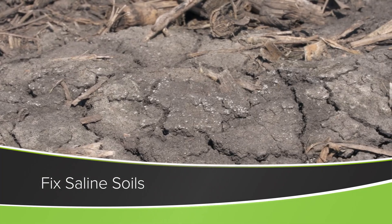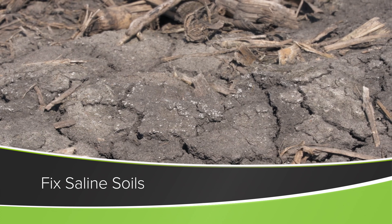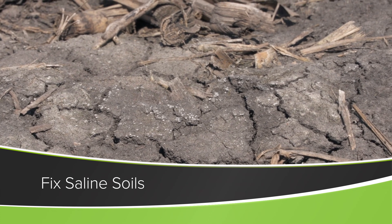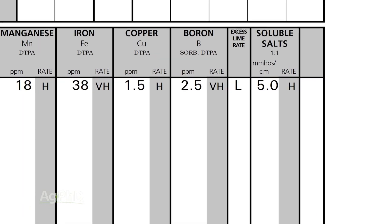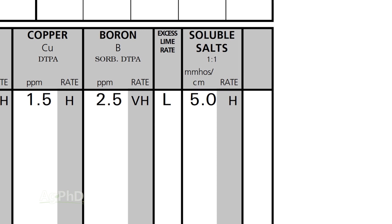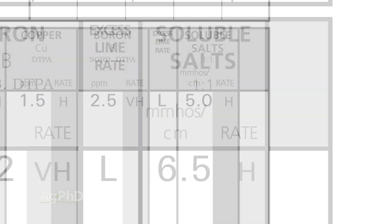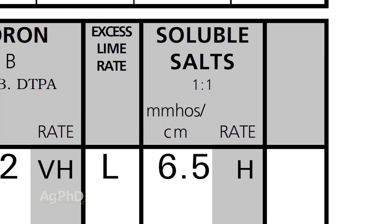Today we're going to talk about how to fix a saline soil. Let's first talk about what a saline soil is. Really all it is is where you have excess salt. Right on your soil test you can look at the salt level or soluble salts, and when you see that number high, you've got an issue.